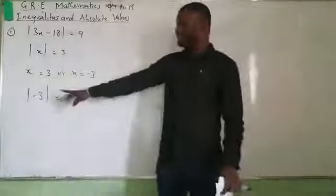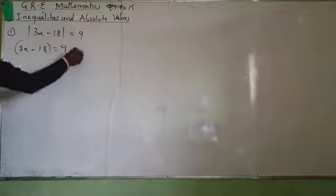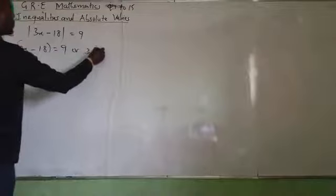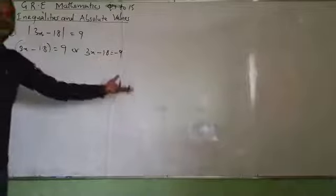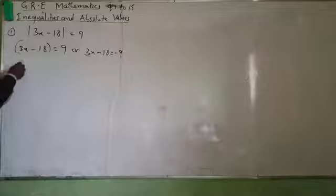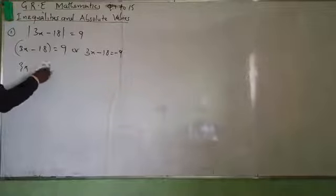When you have something like this, it means when you talk about absolute value of this expression, you can see that 3X minus 18 equals 9, or 3X minus 18 equals minus 9. Those are the two possible values from that absolute value. Which gives 3X equals 27 or 3X equals 9.